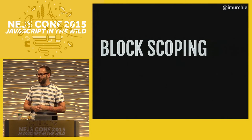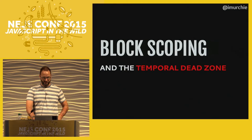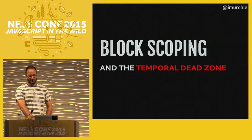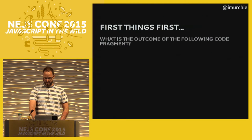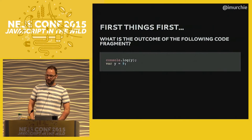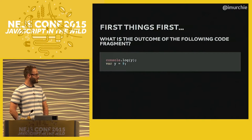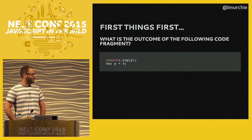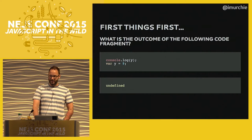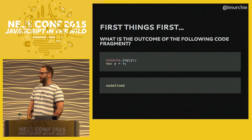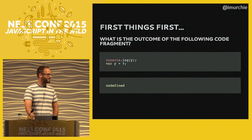Block scoping actually changes what the language does at a basic level in many cases, and the temporal dead zone comes up in block scoping. First — what happens when you run this little bit of code? If you console.log a variable not yet declared using `var`, what you get is `undefined`.